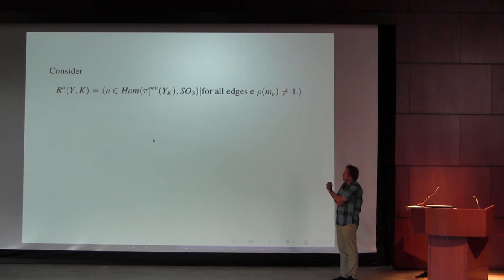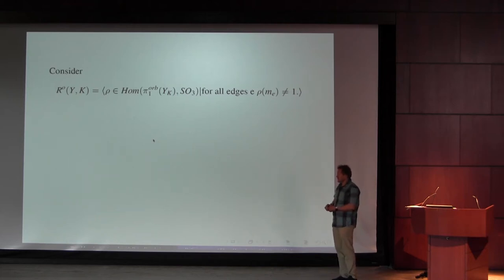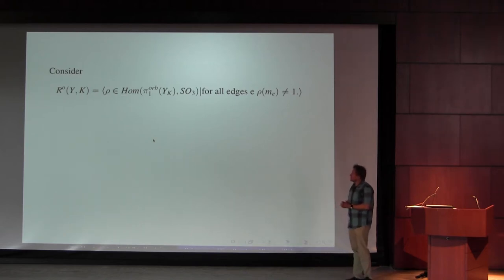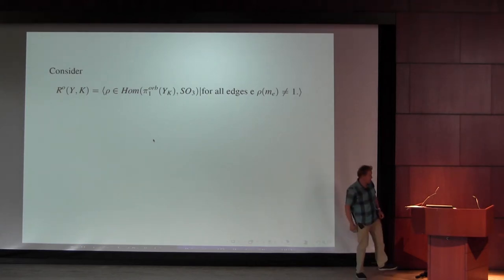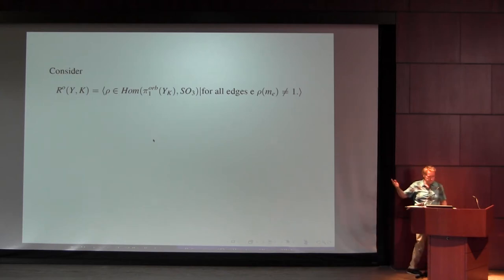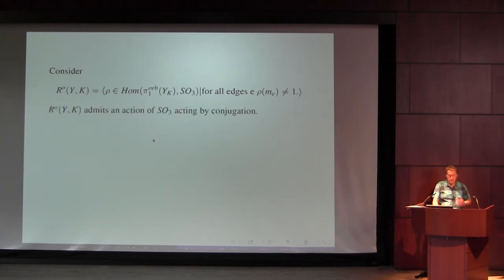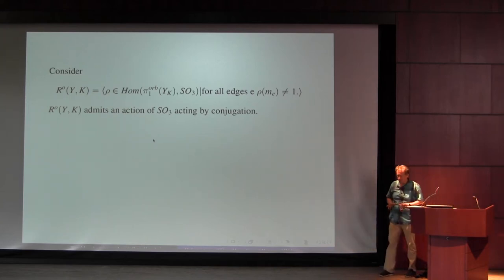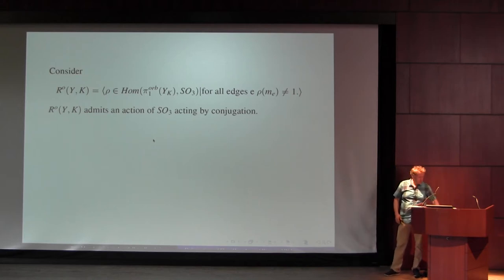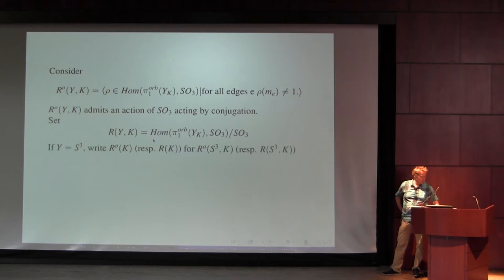When we deal with Floer homology, we often want to study it. Floer homology comes from the Morse homology of the Chern-Simons function, because the Chern-Simons function has critical points which are representations of the fundamental group. There's some notation for the space of representations into SO(3), because we're interested in these Klein four-group representations. Conjugation by SO(3) acts on this space.